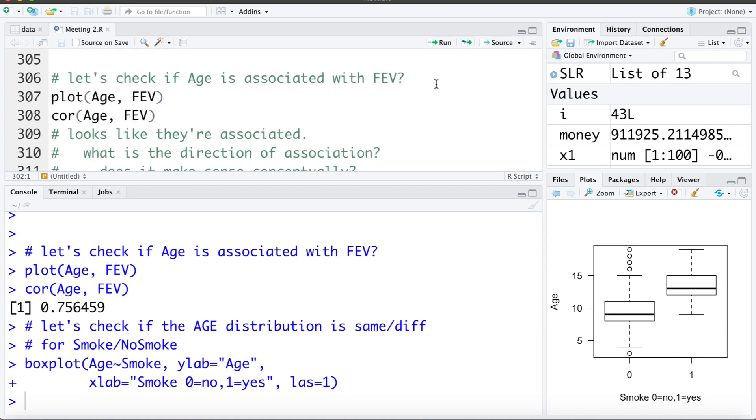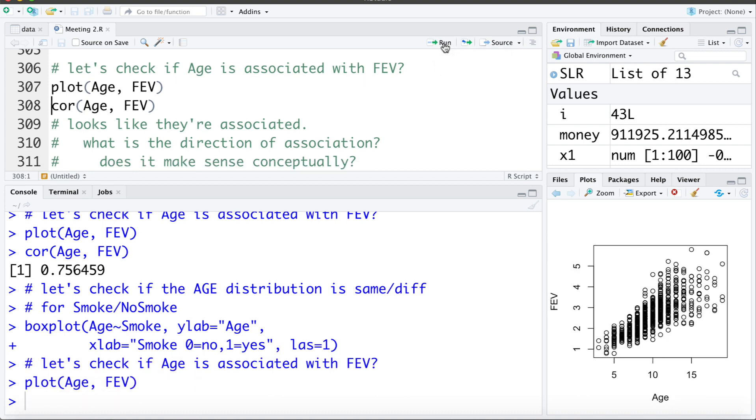Now we can check does age seem to be associated with FEV or lung capacity. To visually explore this we can make a scatter plot plotting age versus FEV. Let's take a look at that. We can see a pretty strong association there.